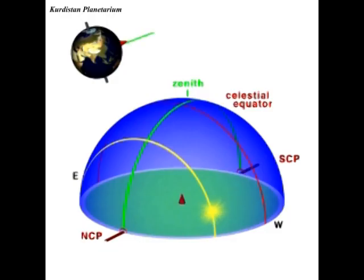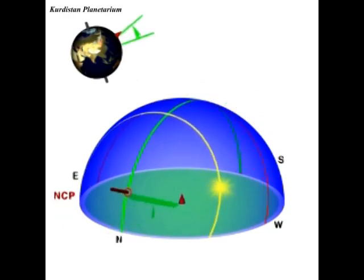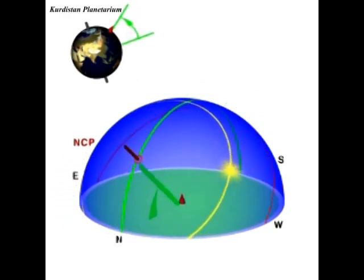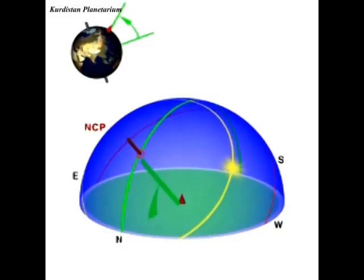At an intermediate latitude, the altitude of the celestial pole in the sky is equal to your latitude on Earth. Some stars are circumpolar and never set.